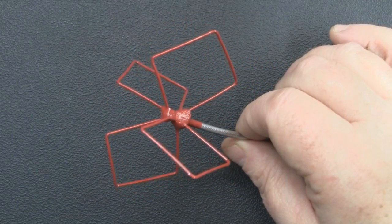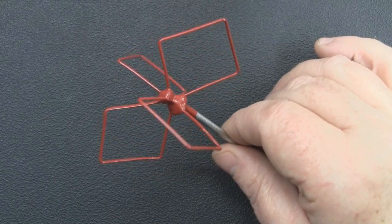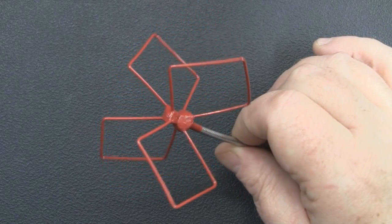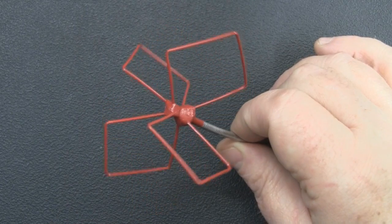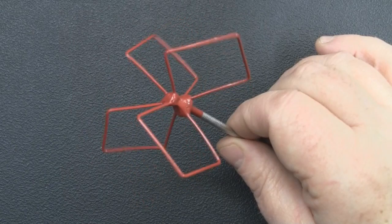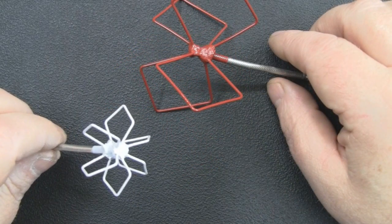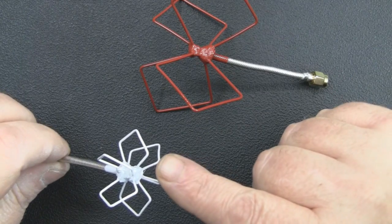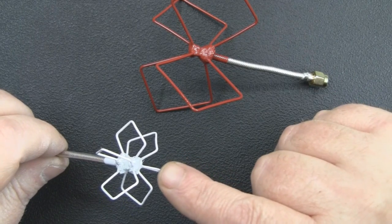In a recent video I showed you how to build this 2.4 gigahertz omni-directional bi-quad antenna. What I thought I'd do now in this video is show you how to build one for 5.8 gigahertz for FPV. This is the 5.8 gigahertz bi-quad antenna that I've designed and I'll show you how to build in this video.